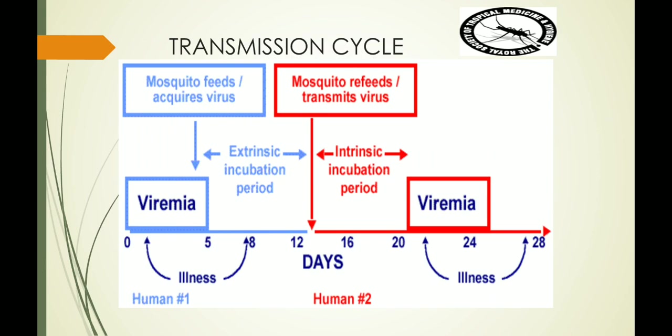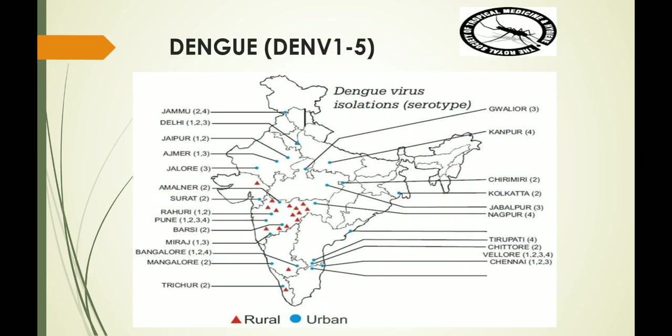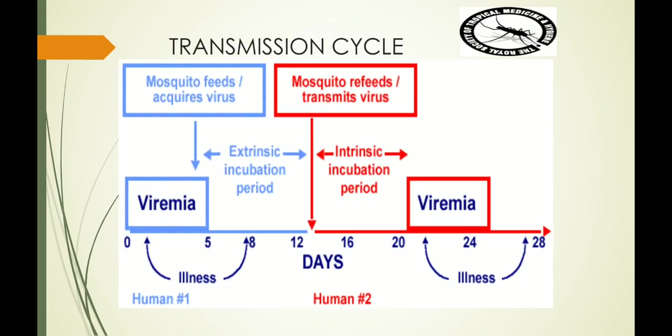Dengue is transmitted primarily by the Aedes mosquito. The Aedes aegypti mosquito is a much more efficient vector than Aedes albopictus because it bites repeatedly more than once to have a complete blood meal. The Dengue virus which is present in the patient's blood usually up to five days following the infection is called the viremic phase. It is during this viremic phase that the person is usually susceptible to transmissibility of this Dengue virus.